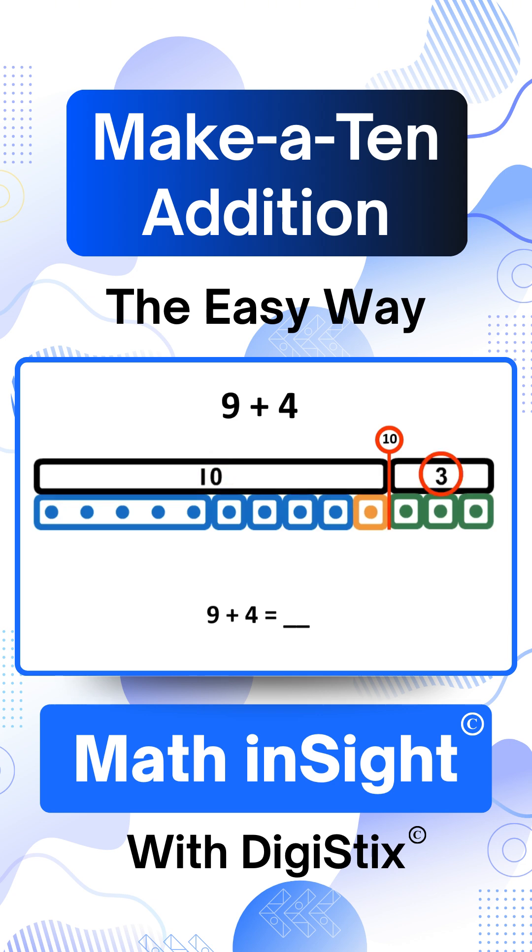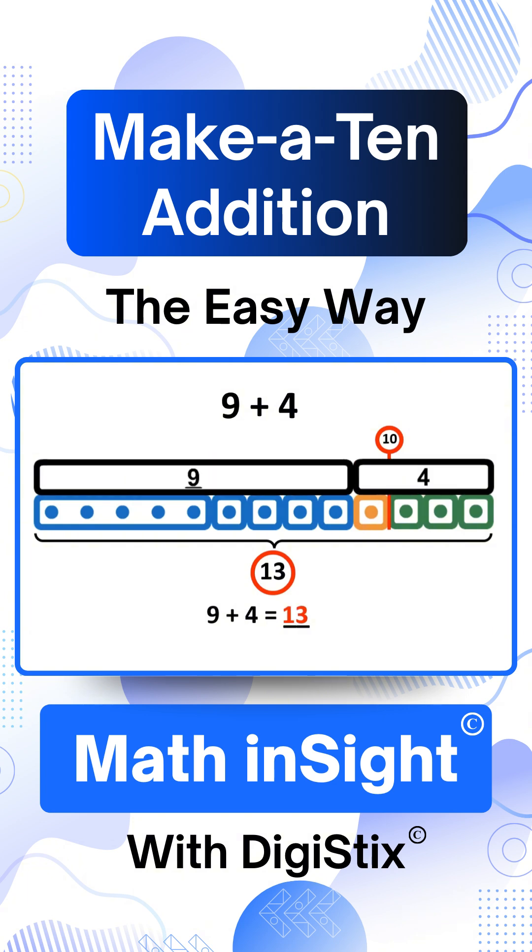3 is the number over 10, which we show like this. We already know that 10 plus 3 is 13. That means 9 plus 4 also equals 13.